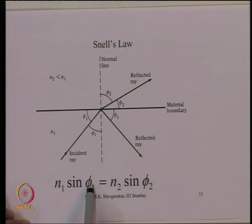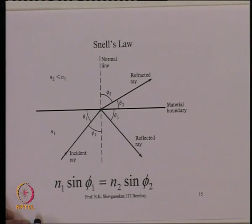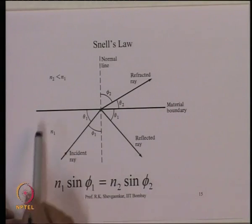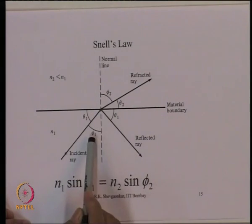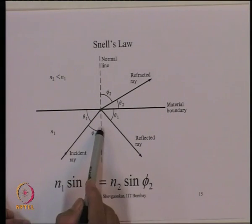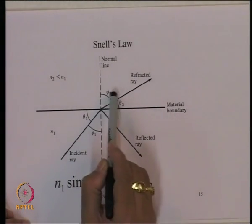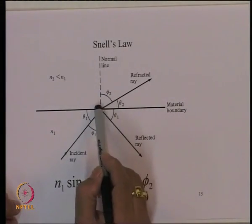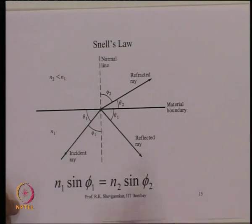The angles are measured from the normal to the interface. If medium n2 is rarer than n1 (i.e., n2 < n1), then φ2 > φ1. As we increase φ1, φ2 approaches 90 degrees — this is the critical angle. Beyond the critical angle, the ray is reflected back into the first medium, which is what Snell's law tells us.